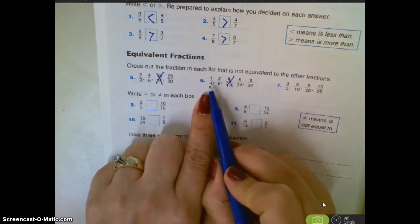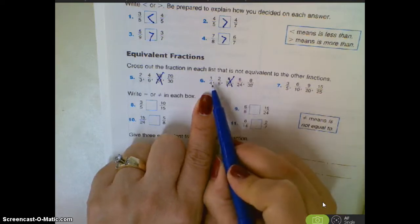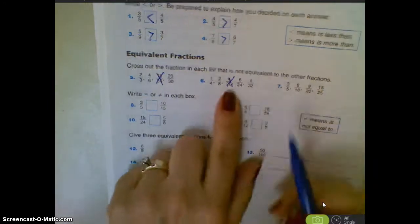Four times six is 24. One times six is six. Four times eight is 32. One times eight is 32, so we got it.